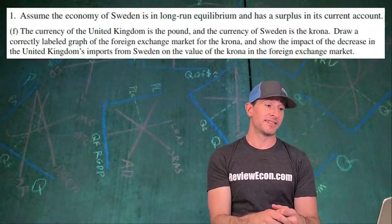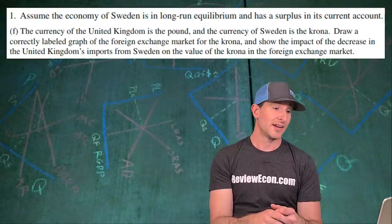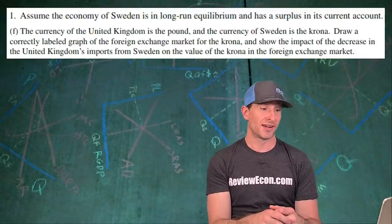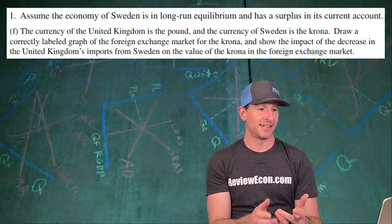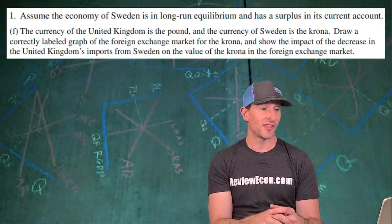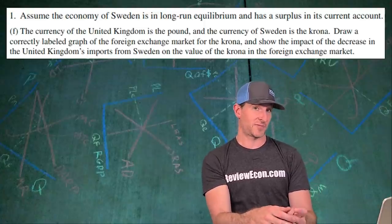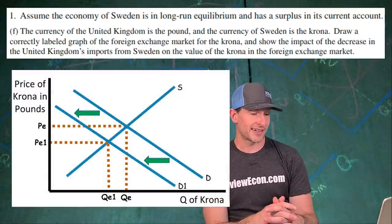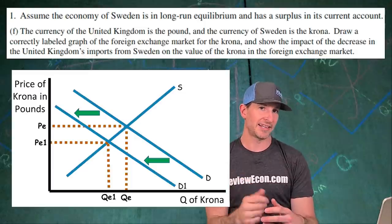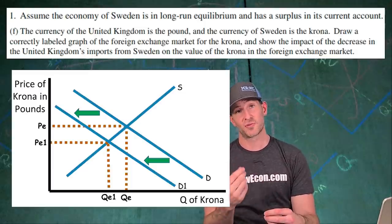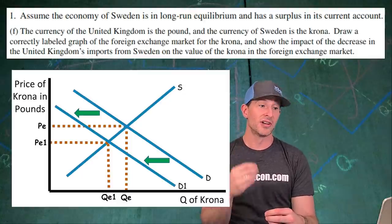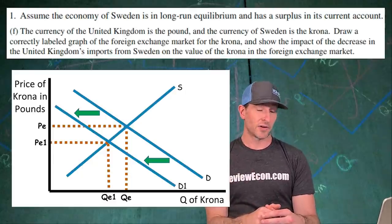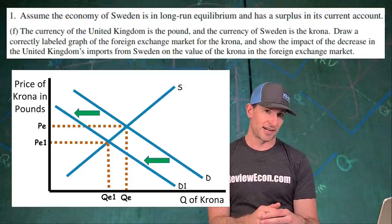If the currency in the United Kingdom is the pound and the currency of Sweden is the krona, we draw a correctly labeled graph of the foreign exchange market for the krona and show the impact of the decrease in the United Kingdom's imports from Sweden on the value of the krona. This is a leftward shift of the demand curve, because the United Kingdom is decreasing its imports from Sweden, meaning it will be demanding fewer units of Swedish currency — the krona. That drives down the equilibrium exchange rate and decreases the equilibrium quantity.